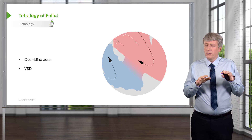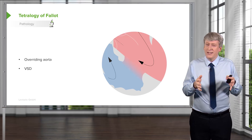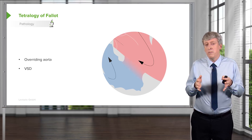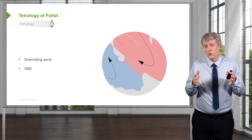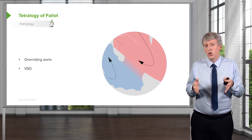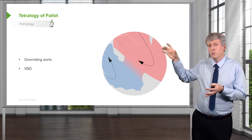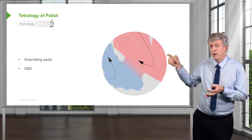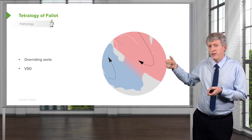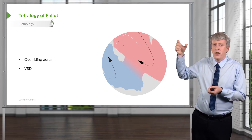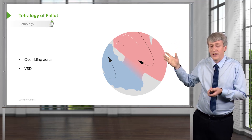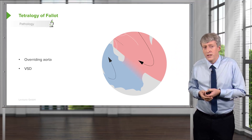When you hear 'tetralogy,' it's not really entirely accurate. You could almost call it a trilogy of Fallot, because you couldn't really have an overriding aorta without a VSD — how could the aorta ride over both ventricles unless there was a hole between them?